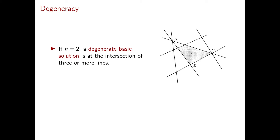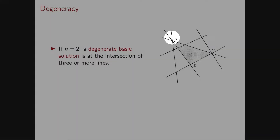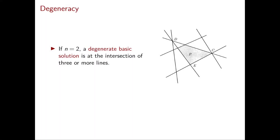In dimension 2, a basic solution is degenerate if it is at the intersection of three or more lines. In this example, the degenerate basic solutions are c, since there are three lines passing through c, and e for the same reason. You can check one by one that all the other basic solutions in this example are non-degenerate.